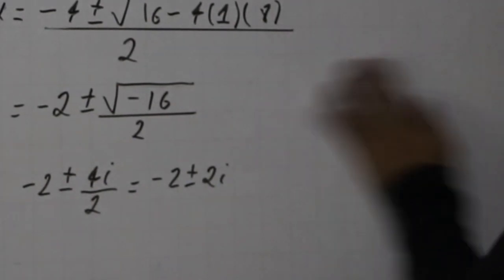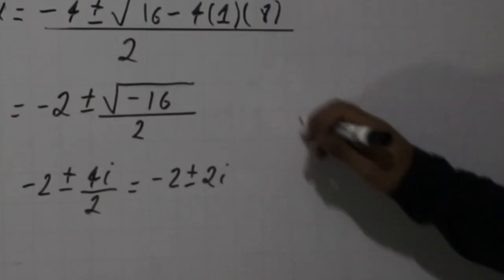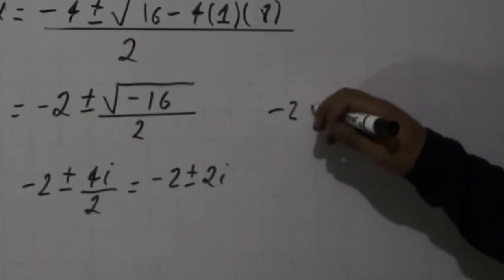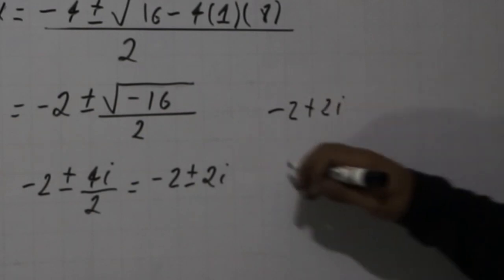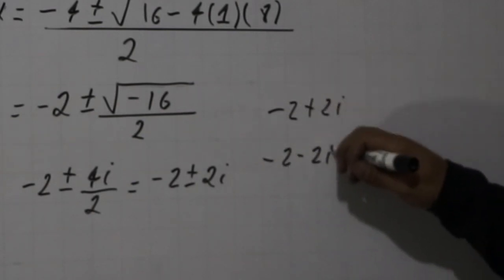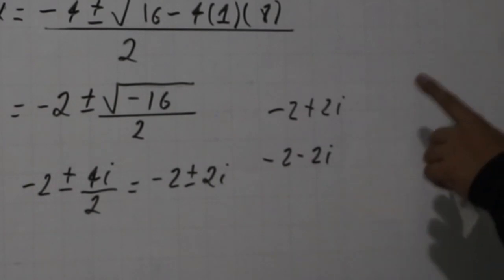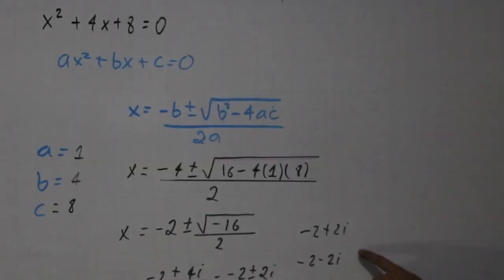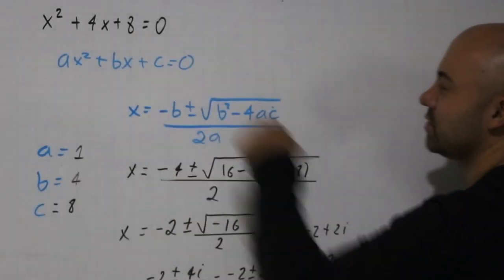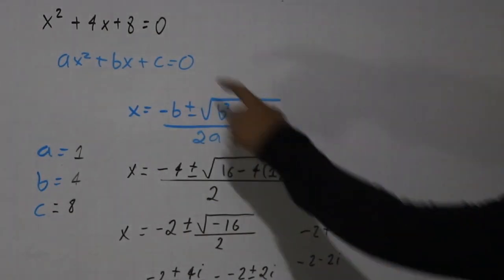And those are the answers. We can write it with plus, so we have -2 + 2i, and we can write it with the minus, -2 - 2i. So how can we be sure that we have the right answer? We can replace the x in the left side of this equation, the original equation, and we have to get 0.